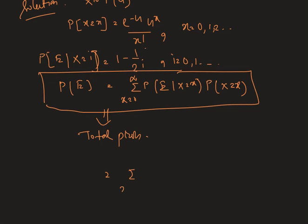Therefore we can write sum x equals 0 to infinity: e to the power minus 4 multiplied by 4 to the power x by x factorial, times 1 minus 1 by 2 to the power x.